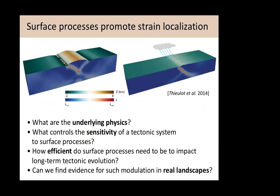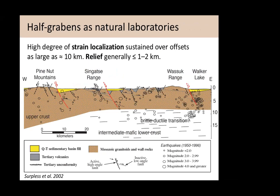If you run an evolutionary wedge model or rifting model, you generally find that when you rework the surfaces extensively, it helps promote deformation on fewer, longer-lived faults. What I really want to get into today is: what are the physics underlying these feedbacks in detail? What might make a particular tectonic system more sensitive to the growth or removal of its own topography? And when are surface processes efficient enough to really alter the landscape sufficiently to have a tectonic impact? Can we find evidence or indication for such modulation in real landscapes?